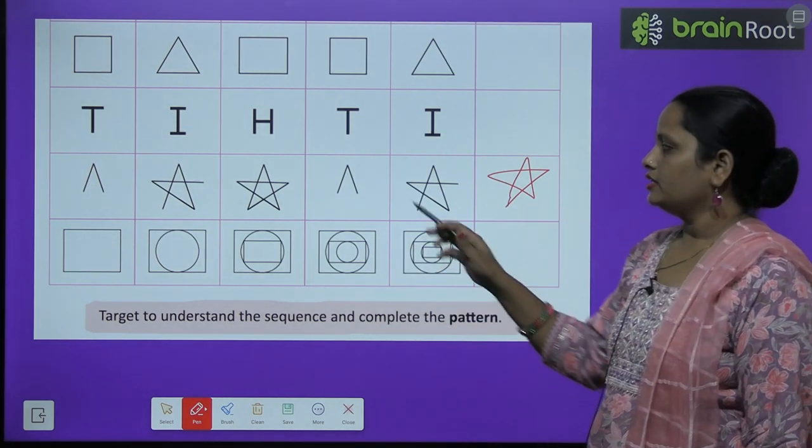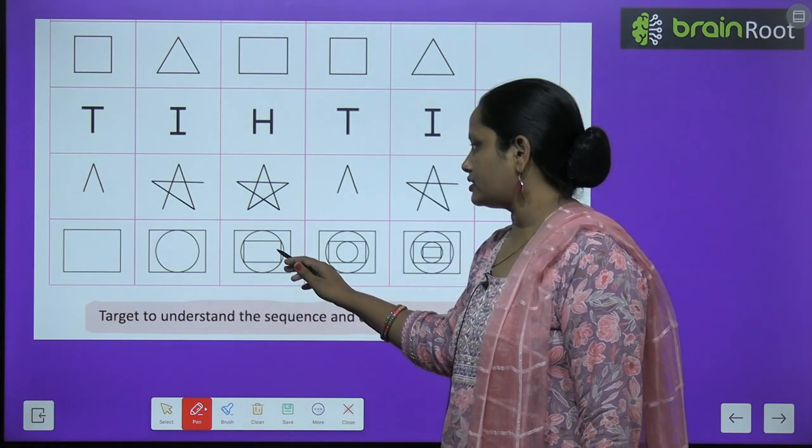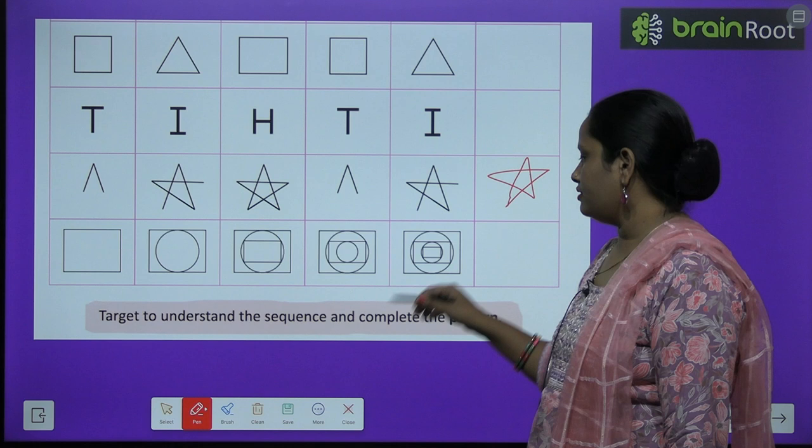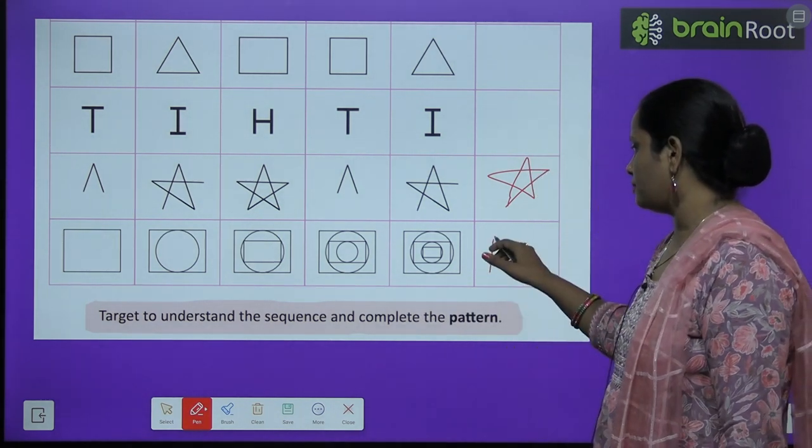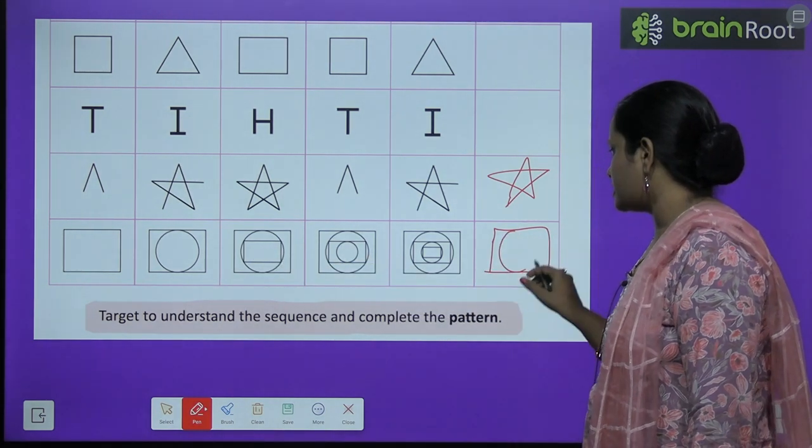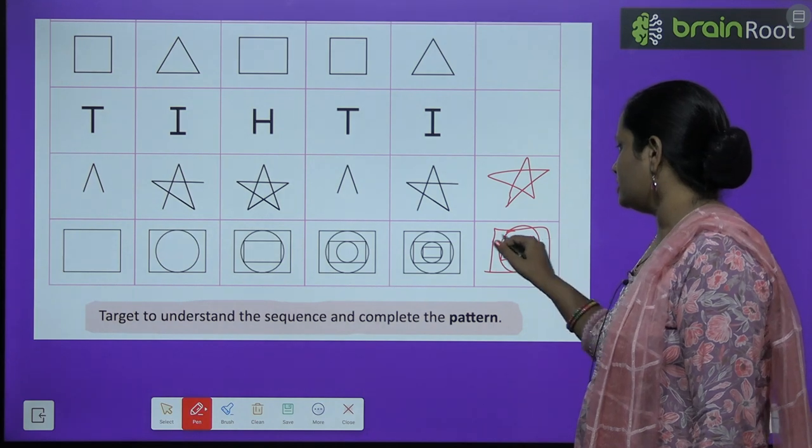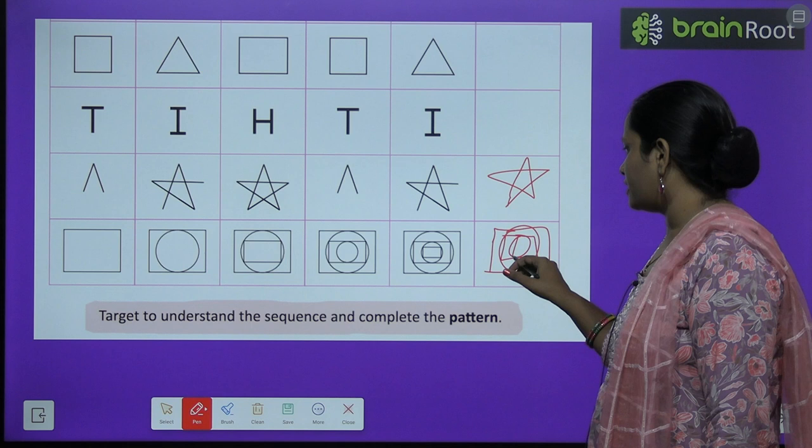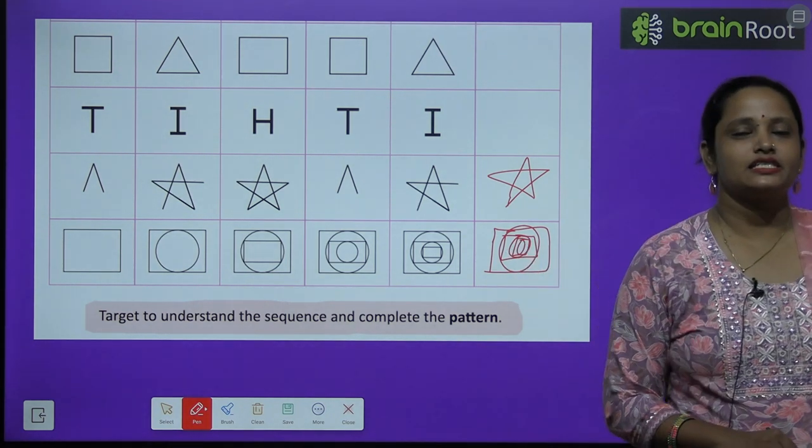Clear? Similarly, rectangle, circle, rectangle, and then circle. Again rectangle. Now what happened here, one more circle inside. So first we have to make a rectangle. Then inside it make a circle. Then inside it make a rectangle. Then inside it make a circle. Then inside it make a rectangle.